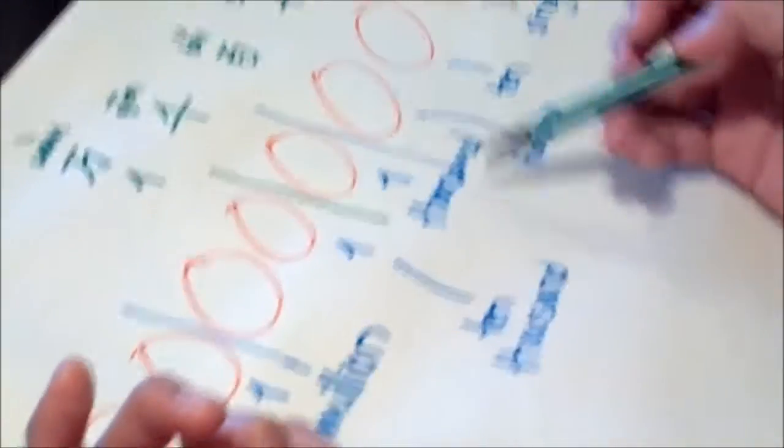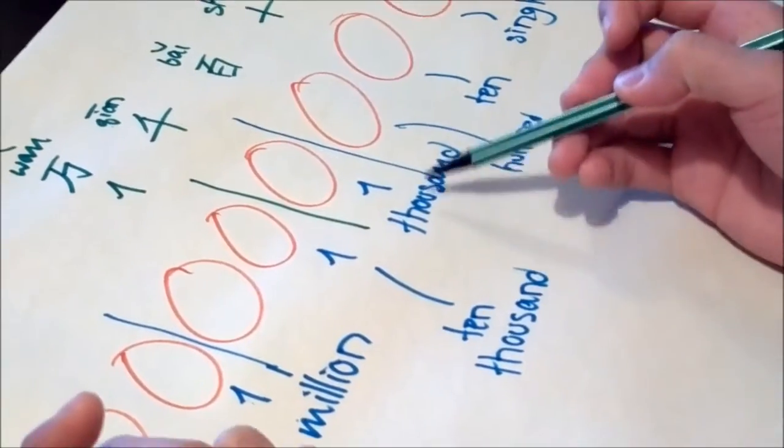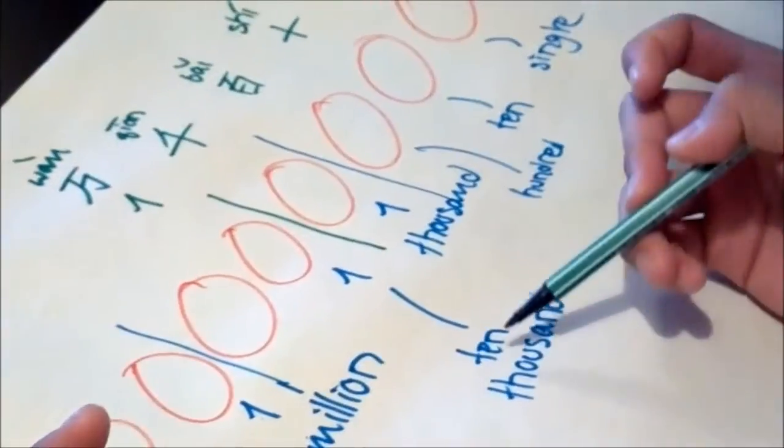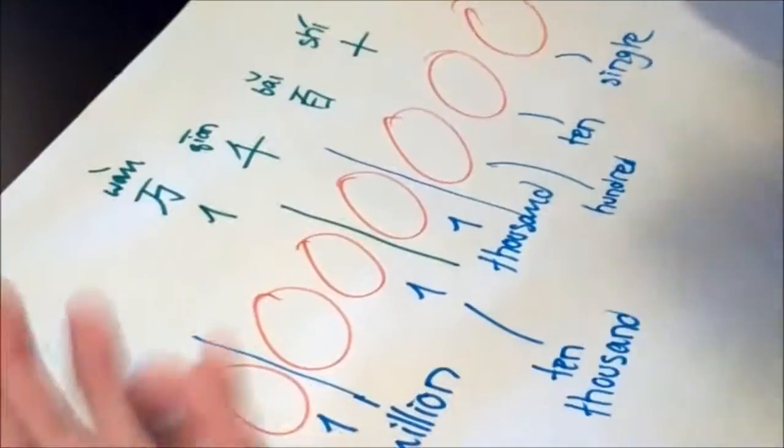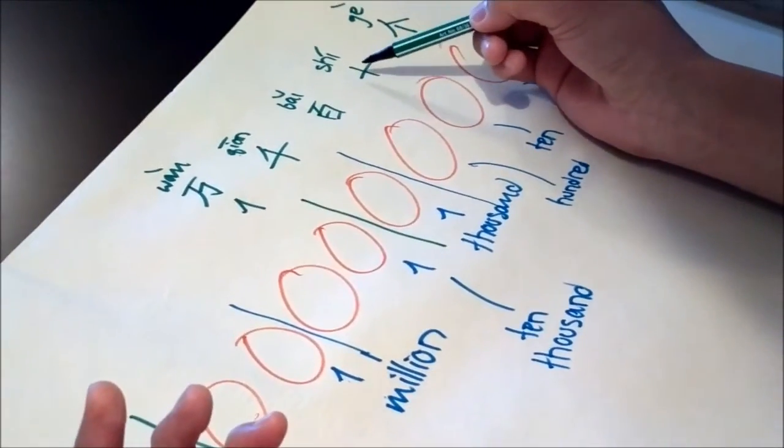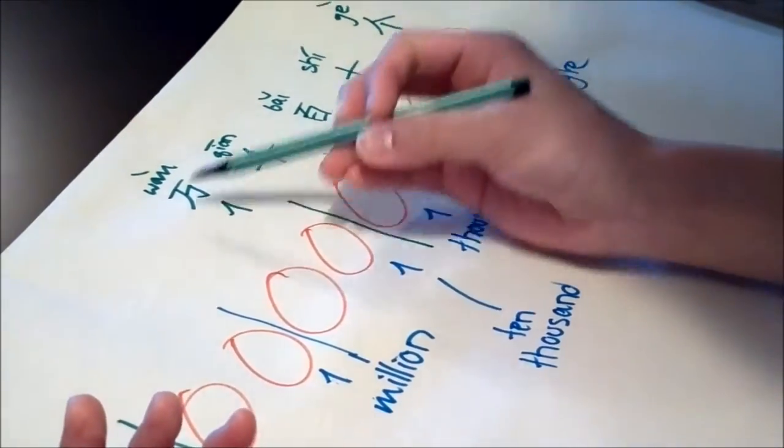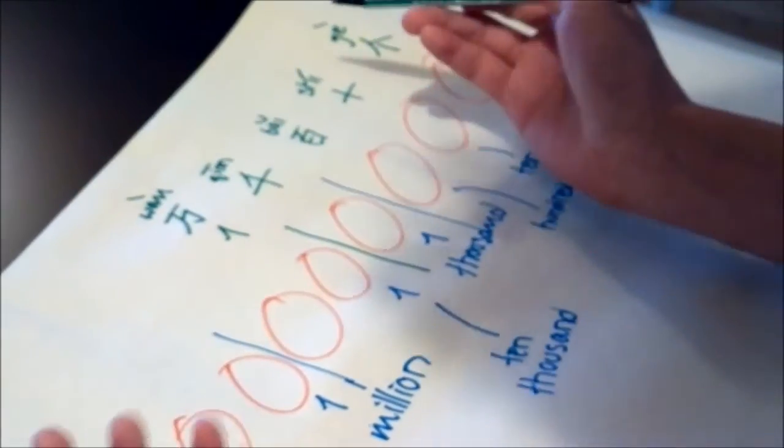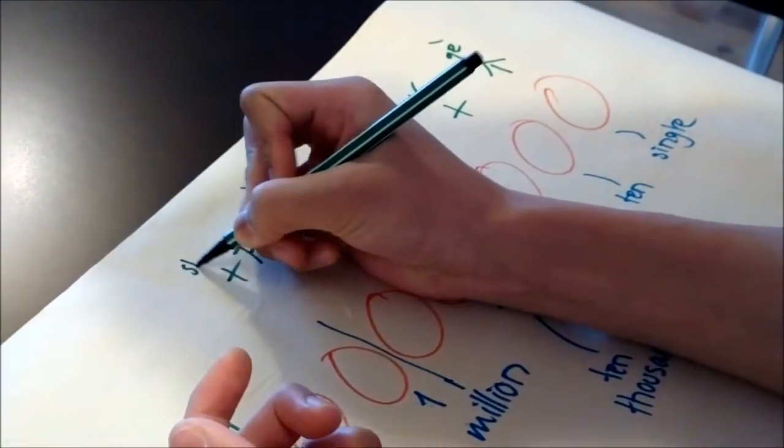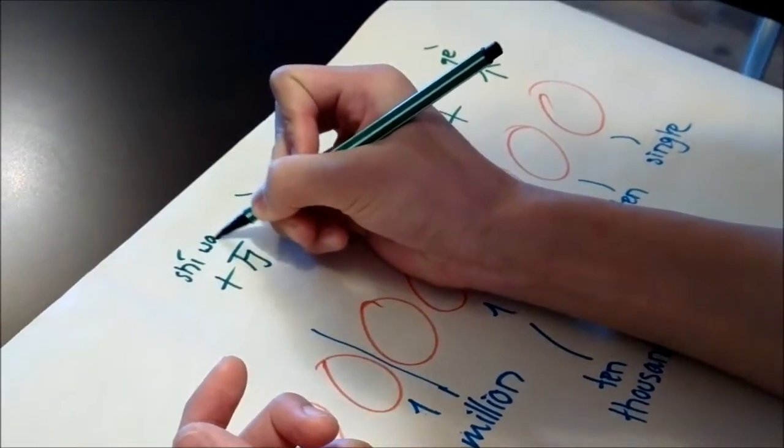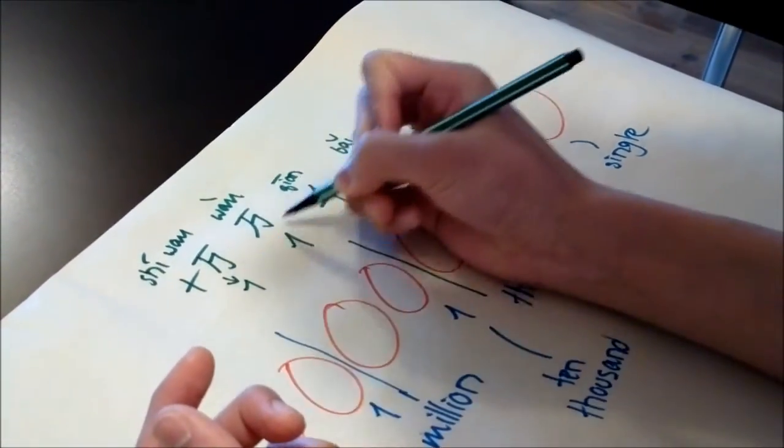So in Western culture, after three zeros, it will go to thousand, then it will go to ten thousand. So we have basically the same thing. It's just shi, so ten, wan, so ten thousand, which is a hundred thousand in Western culture. So what we have here is shi wan.